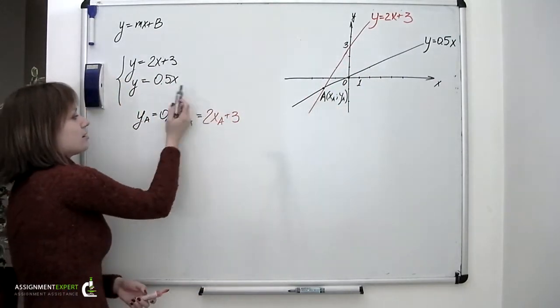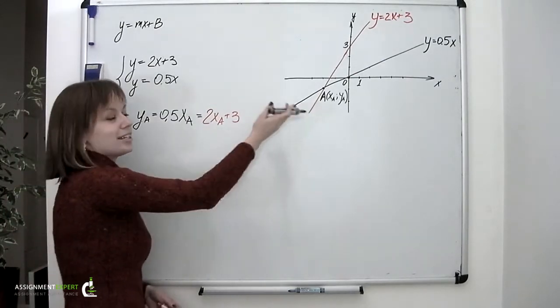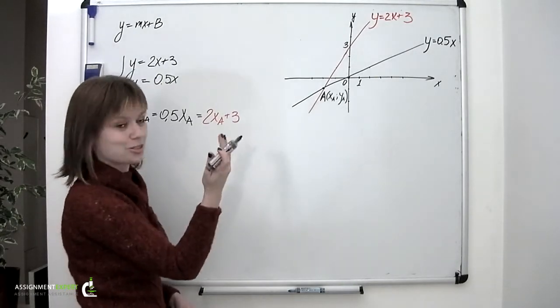So having solved this newly obtained equation for x, we would obtain the x coordinate of the intersection point A. And let's do that.